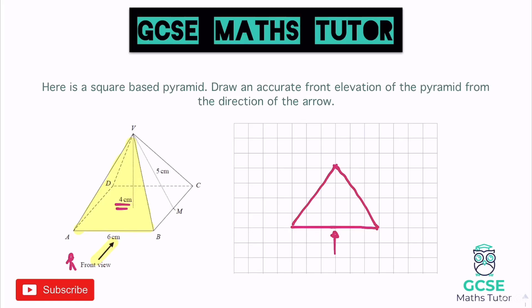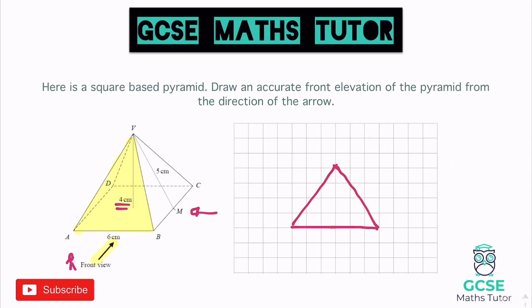Connect that up, and that's what we would see — a triangular face from the front with height four and base six. From the side it would look exactly the same since it's a square base pyramid. For the plan, we'd just draw a square with side length six and the four lines of the pyramid crossing over. But we only needed the front elevation, so that's our first question done.